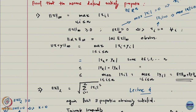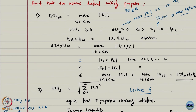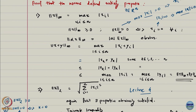The x plus y infinity norm is exactly equal to max over i from 1 to n of |x_i + y_i|. For a finite length vector, this maximum is attained at some particular index k, so it equals |x_k + y_k|. This is less than or equal to |x_k| + |y_k| by the triangle inequality for absolute values. And this is less than or equal to max|x_i| + max|y_i|, which is the infinity norm of x plus the infinity norm of y. The proof works because the vector is finite dimensional.